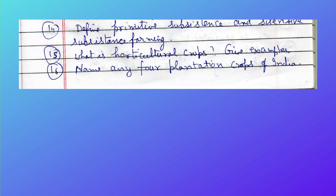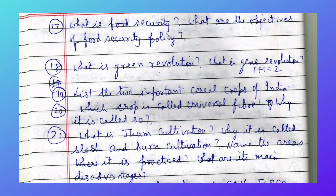What are horticultural crops — give examples. Name any four plantation crops of India. What is food security? What are the objectives of the food security policy? What is the Green Revolution? What is the Gene Revolution?